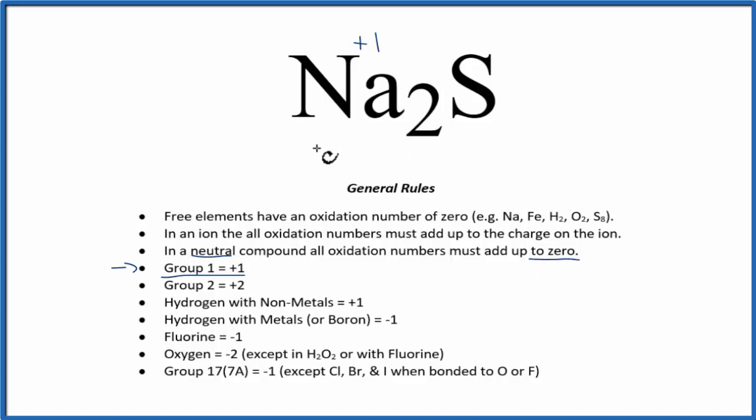So we can make a statement like this. We have plus 1 for the sodium, but we have 2 sodium, so we'll multiply that by 2, plus the oxidation number of sulfur, which we don't know, that will equal zero. They should all add up to be zero because this is a neutral compound.